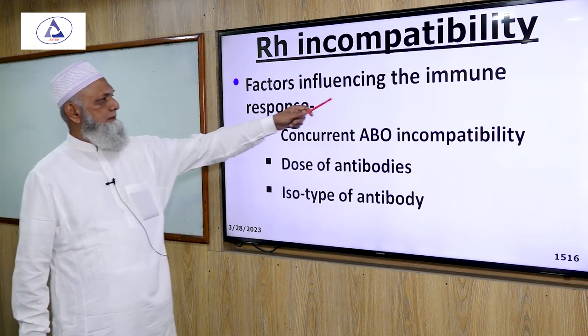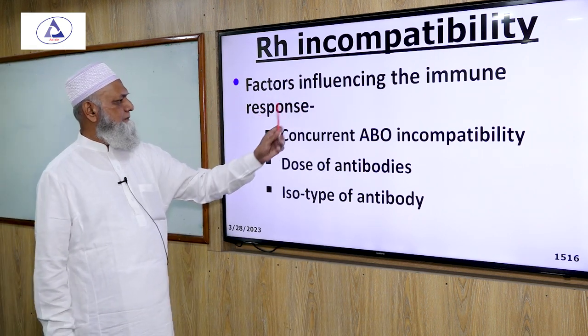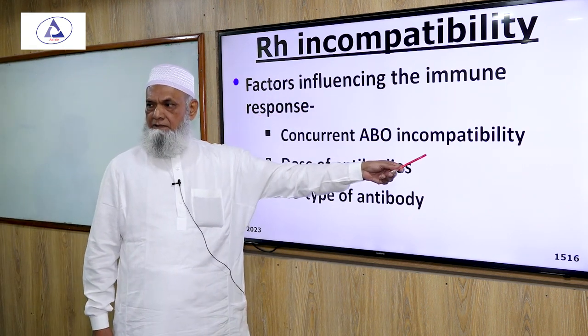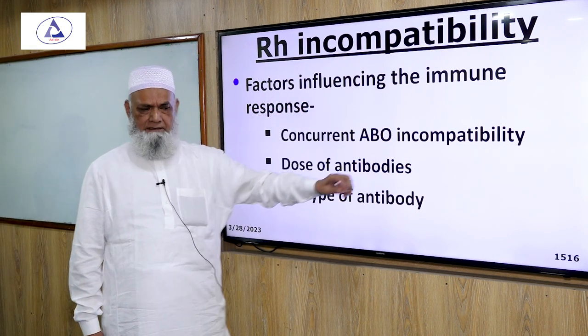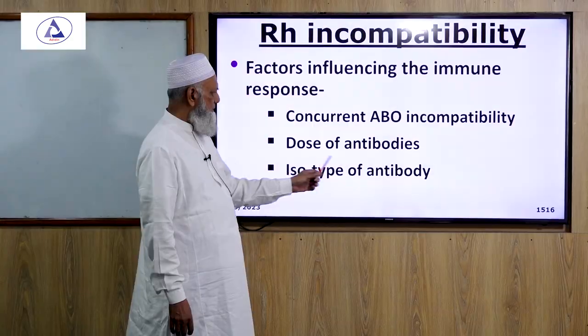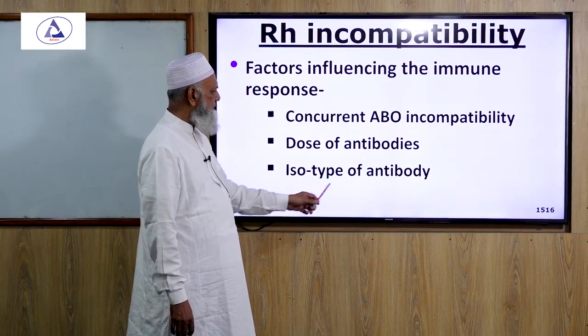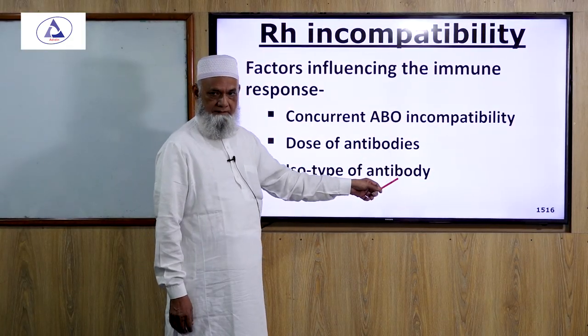Factors influencing the immune response include concurrent ABO incompatibility, dose of antibodies, and isotype of antibodies.